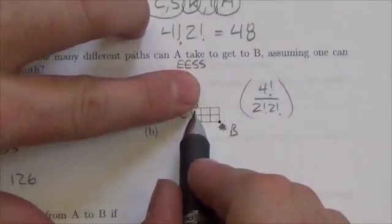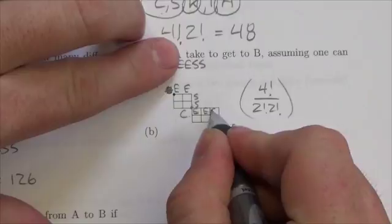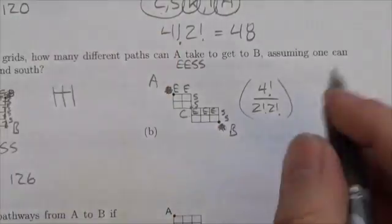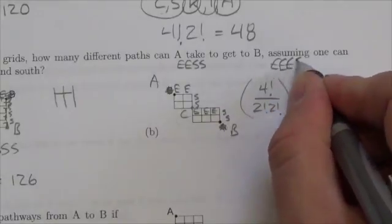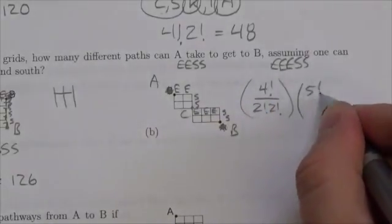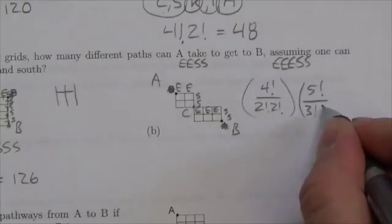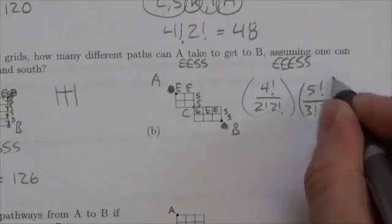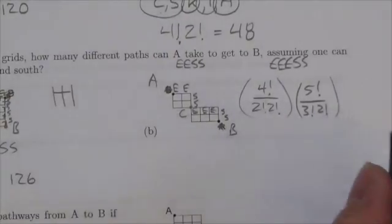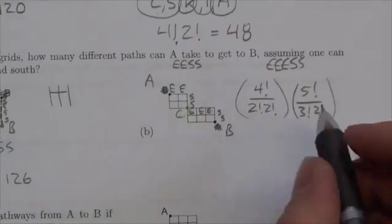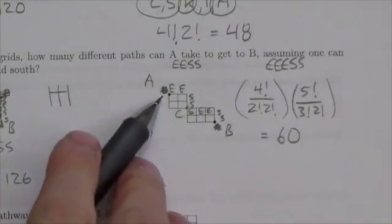Now I have to multiply that by the number of ways I can go from C to B. And that's going to be going east, east, east, and then south, south. So I've got east, east, east, south, south. There are five letters there. Three of which are going east, two of which are going south. And so again, that's like organizing the letters of a word. And now I'm just going to multiply that all out. And when you do, you get that there are 60 unique paths that take you from A to B.